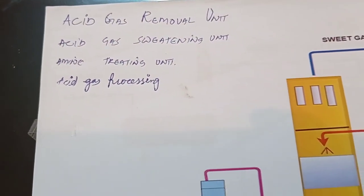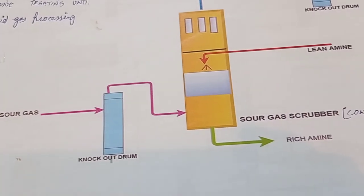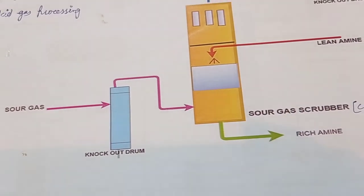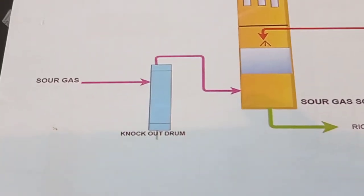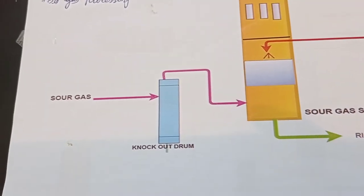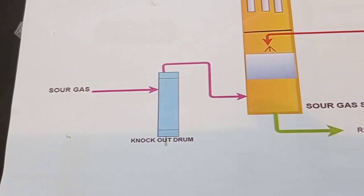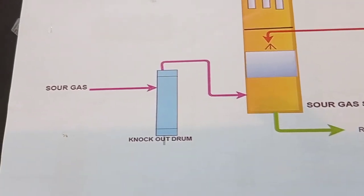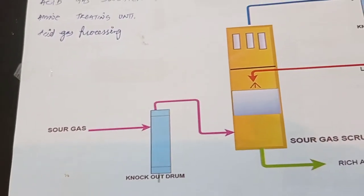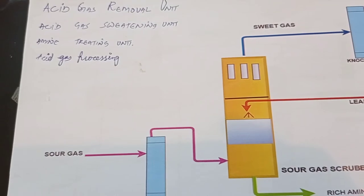Now we look at the acid gas removal unit, also called acid gas sweetening unit, amine treating unit, or acid gas processing unit. In hydrotreating, sulfur forms as H₂S, nitrogen as ammonia, and oxygen as water. In the high-pressure separator, hydrogen is removed and the hydrotreated feed goes for fractionation. Off-gases containing H₂S from the fractionator and high-pressure separator go to the acid gas removal unit where H₂S is removed.